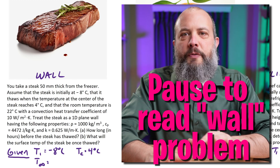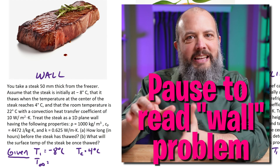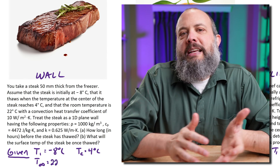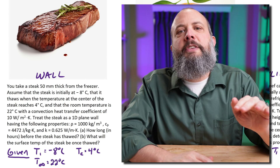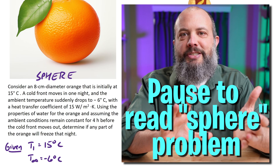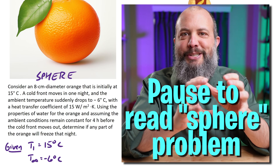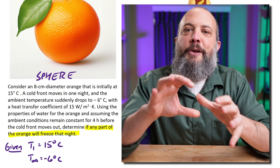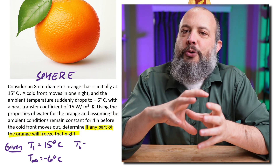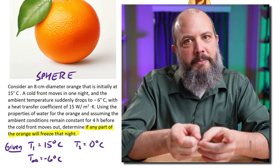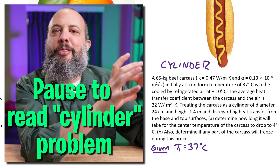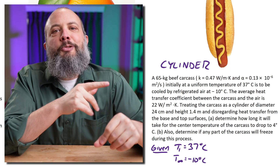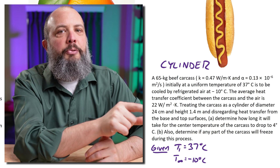For the steak problem, we've got a steak that starts at negative eight degrees Celsius, removed from the freezer, and we're figuring out how long it will take to thaw and what the surface temperature will be when it is thawed. The orange starts at 15 degrees Celsius, but freezing weather is coming in at negative four degrees, and we need to figure out in four hours whether any part of the orange will freeze, which would ruin the crop. The beef carcass cylinder starts at 37 degrees Celsius and we throw it in the freezer — we're figuring out how long it will take for the center to cool to four degrees.